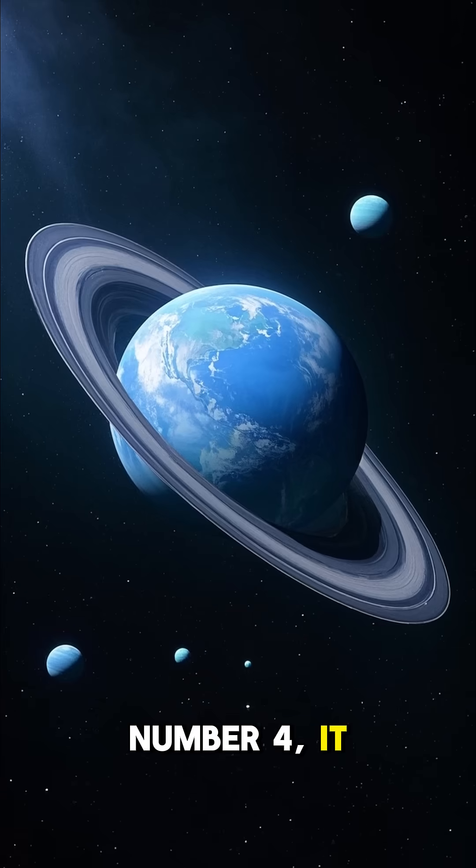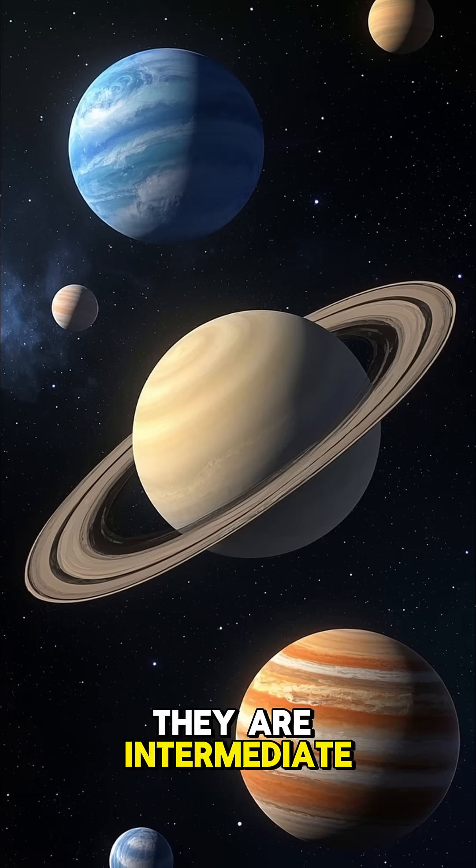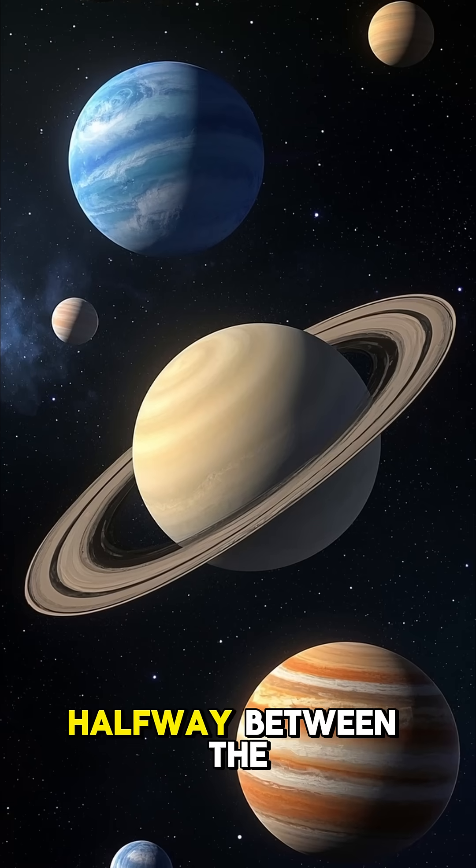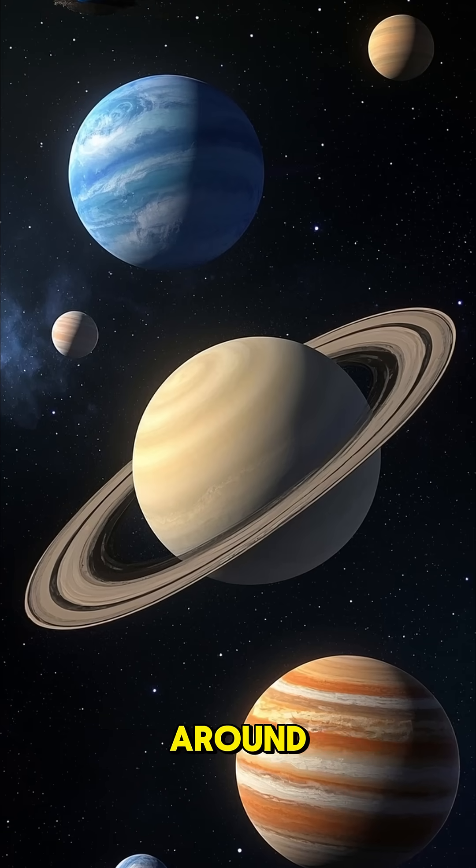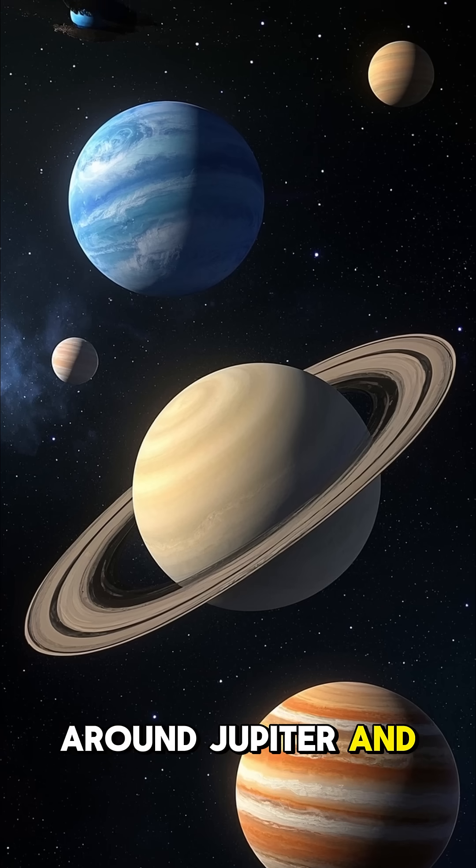Number four, it has rings. We can see them from Earth with a special camera. They are intermediate in complexity, halfway between the more extensive set around Saturn and the simpler rings found around Jupiter and Mars.